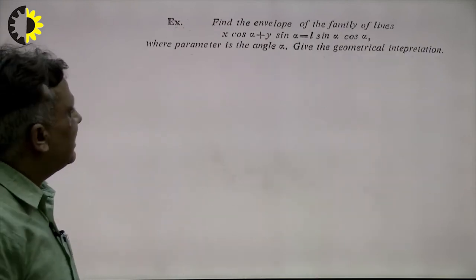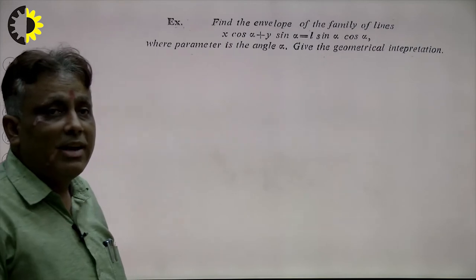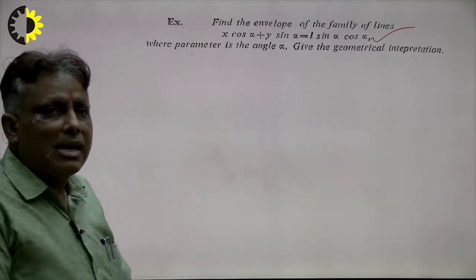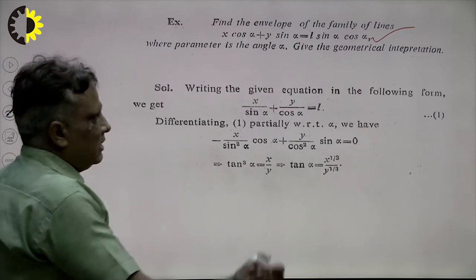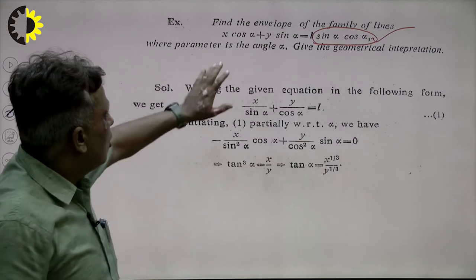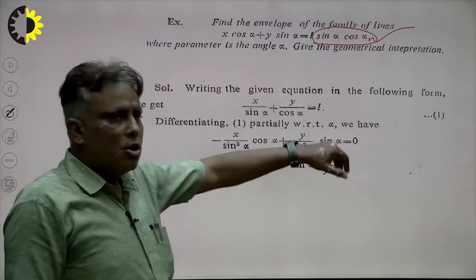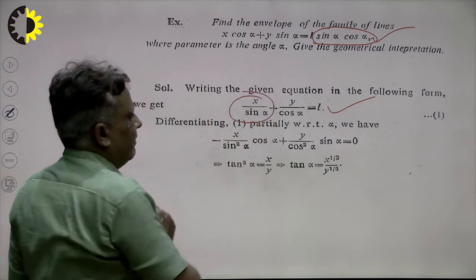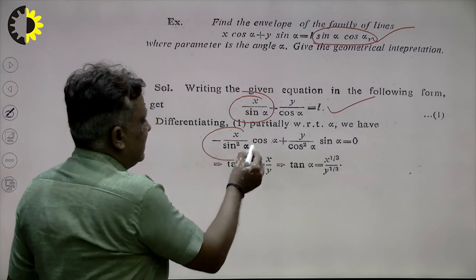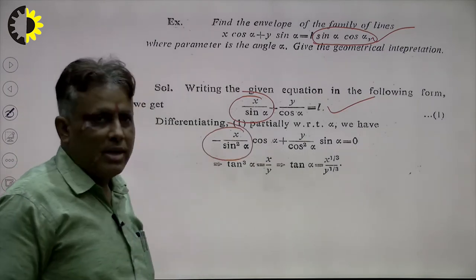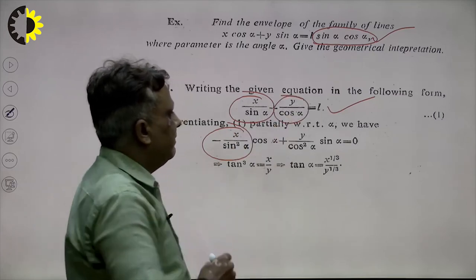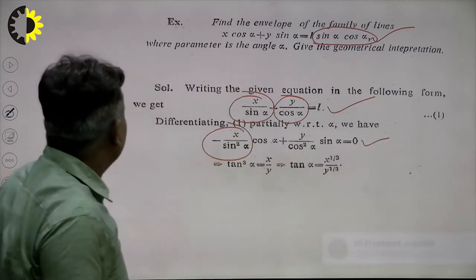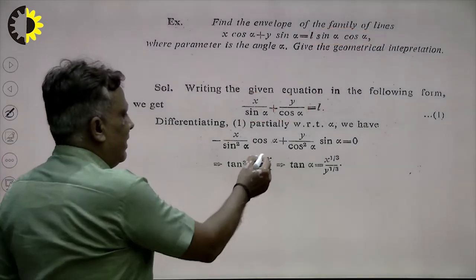Consider another problem: find the envelope of the family of straight lines X cosα + Y sinα = L sinα cosα, where α is the parameter. Dividing by sinα cosα, we get X/sinα + Y/cosα = L. Differentiating with respect to α: differentiation of X/sinα gives −X cosα/sin²α, and differentiation of Y/cosα gives Y sinα/cos²α. From this we find tan³α = X/Y, so tanα equals this value. Using a right-angle triangle with X^(1/3) as opposite and Y^(1/3) as adjacent, the hypotenuse is (X^(2/3) + Y^(2/3))^(1/2).